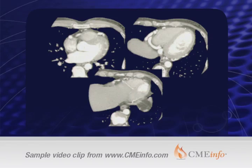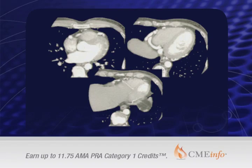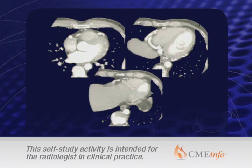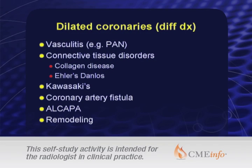It's a very striking case — you don't see this very much. What you notice is there's massive dilatation of the coronary arteries, and it involves both the right and the left system. So what are you thinking about in those cases? Fistulas often cause dilatation of the right or the left, but it's unusual to cause dilatation of both systems.